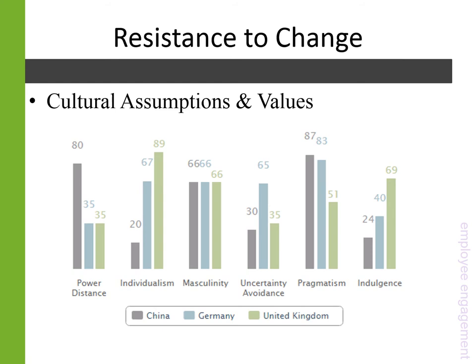Finally, indulgence asks about the degree to which a society is restrained — the degree to which people try to control their desires and impulses. In a low-indulgence society, people tend to have the perception that their actions are restrained by social norms and indulging themselves feels wrong. So in Chinese and German organizations compared to British ones, people might be less willing to voice their concerns about change and just carry on with it, whereas in British organizations you'd probably get a more genuine sense of relative support for the change. These are general statements, but give us a starting point for diagnosing and anticipating different change management and communication needs based on organizational and national culture.